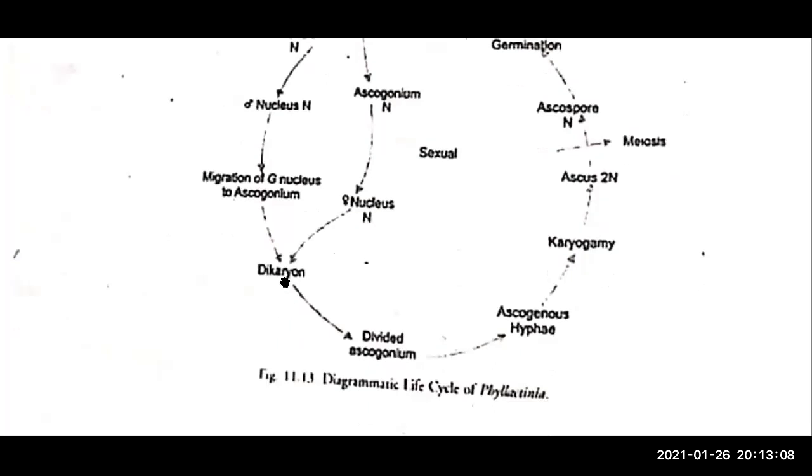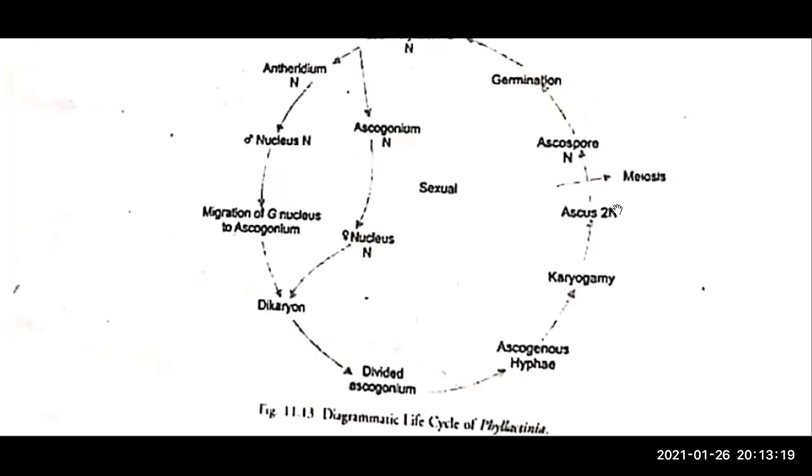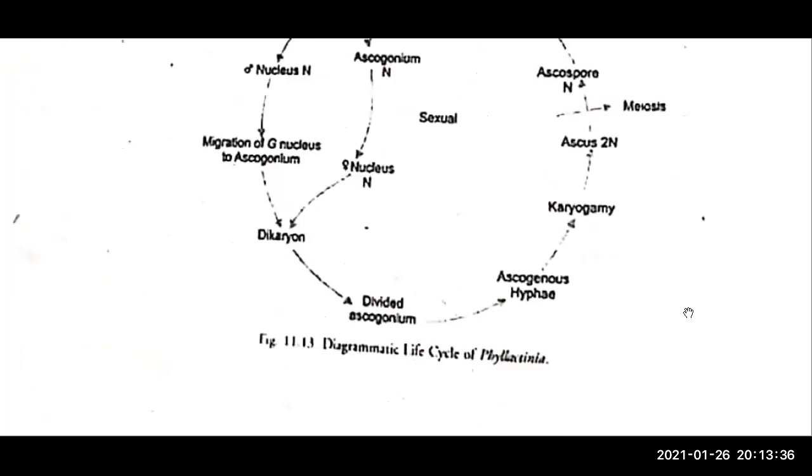The ascogonium, which is the female sex organ, fuses with the anthridium. When both nuclei of the two structures fuse, they produce the dikaryotic stage. This dikaryotic stage produces the ascogonium, which then produces ascogenous hyphae. Ascus 2N structures develop, and meiosis produces the haploid ascospores. The ascospores then produce new mycelium on the leaf, completing the life cycle of Phylactinia.